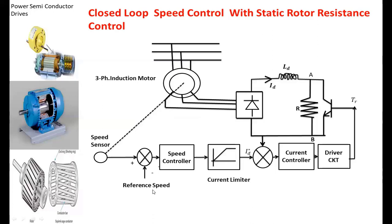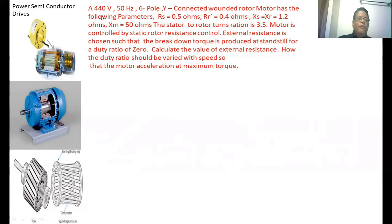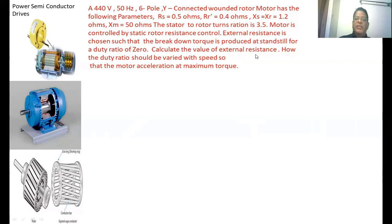A 440V, 50Hz, star-connected wound rotor induction motor has the following parameters: stator resistance = 0.5 ohm, rotor resistance referred to stator = 0.4 ohm, stator reactance and rotor reactance referred to stator = 1.2 ohm, magnetization reactance = 50 ohm, stator-to-rotor turns ratio = 3.5. The motor is controlled by static rotor resistance control. The external resistance is chosen such that breakdown (maximum) torque is produced at standstill for a duty ratio of zero. Calculate the value of external resistance and how the duty ratio should be varied with speed to maintain acceleration at maximum torque.